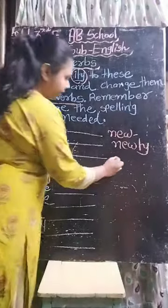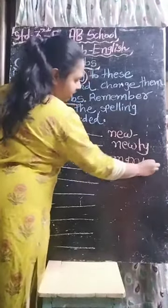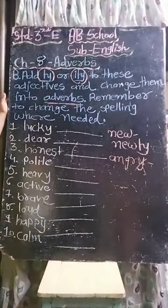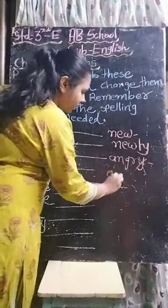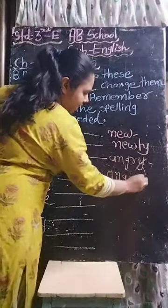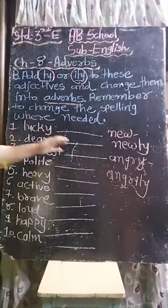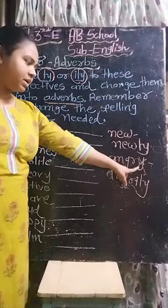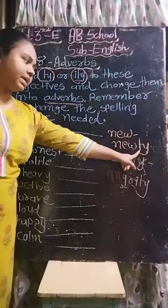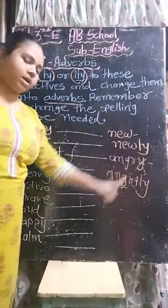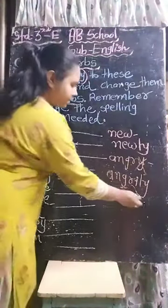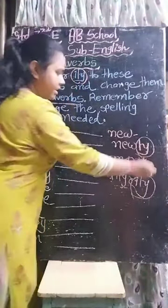फिर 'angry' — यहाँ पर Y है, तो Y को cut करना है, निकाल देना है। और उसकी जगह I-L-Y add करना है, so it becomes A-N-G-R-I-L-Y, 'angrily'. जहाँ पर Y होगा, वहाँ Y निकालके I-L-Y add करना है। बाकी सब में सिर्फ L-Y add करना है।